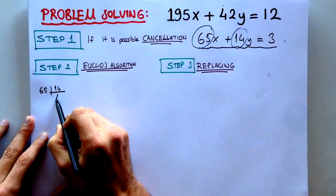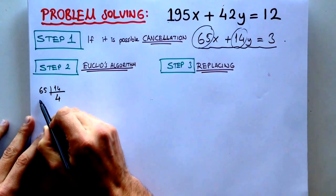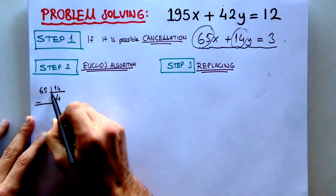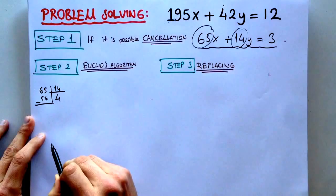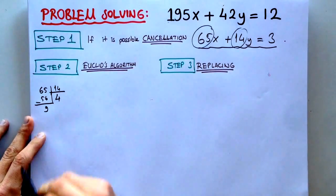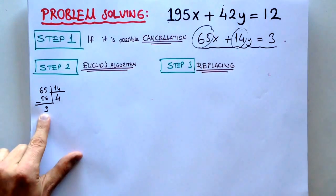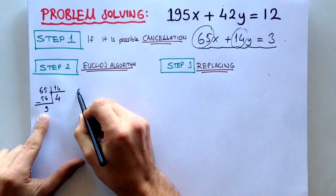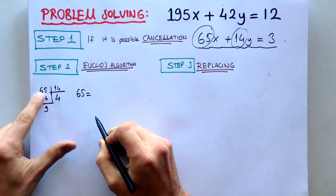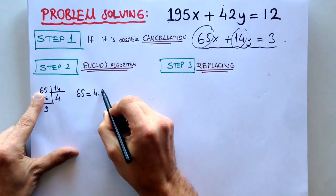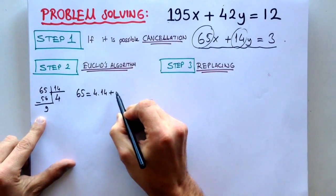we will see that 4 times is 56, and it has a remainder 9. And if we write 65 like this, 65 is equal to 4 times 14 plus 9,